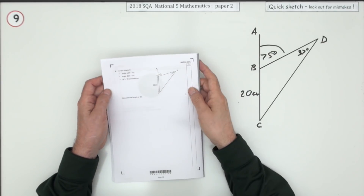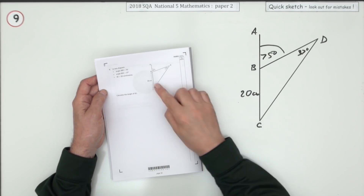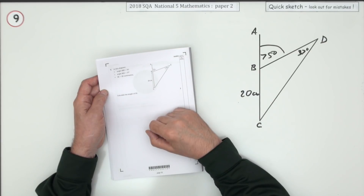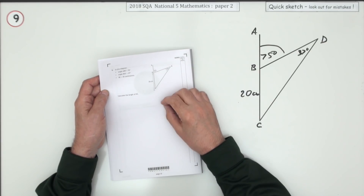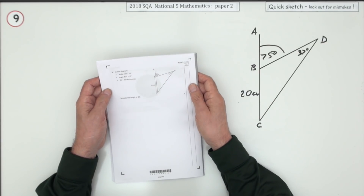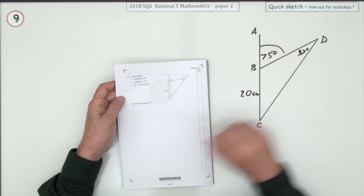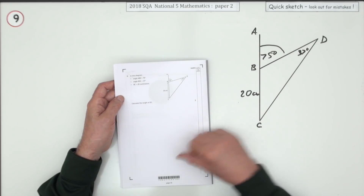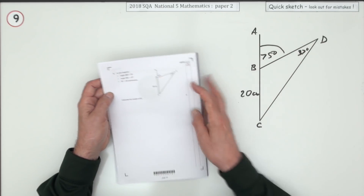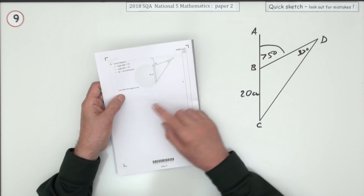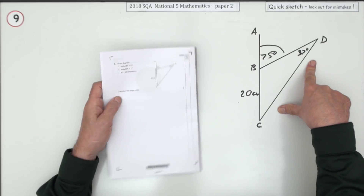Number 9 from paper 2 of the 2018 National 5 Maths. It's a trigonometry question — not right-angled, so it looks like a sine rule or cosine rule. The information is given in the diagram. Notice it's nothing to do with bearings, so you don't need norths or anything. Calculate the length of DC.